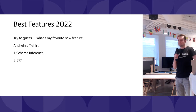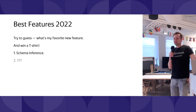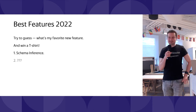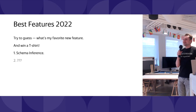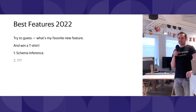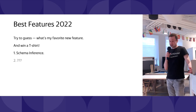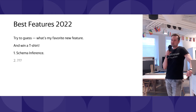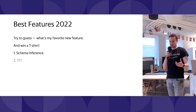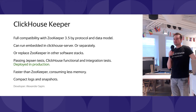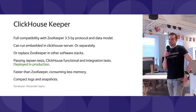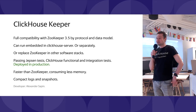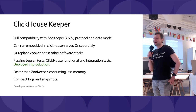No one guessed that feature correctly, so no one gets a t-shirt for it — but here's a second chance. The second favorite feature is ClickHouse Keeper. This is an infrastructure component you usually don't like — you usually fear ZooKeeper. But now we have ClickHouse Keeper, which is much nicer. How many people in this room like Java? No one.